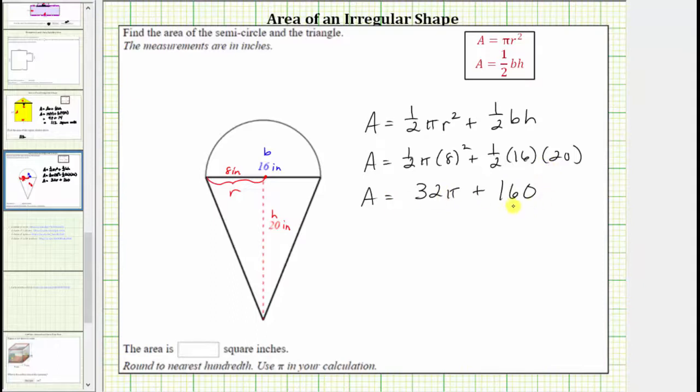So this is the exact area and again the units would be square inches so we put this in parentheses and include the units of square inches. But we are told to use pi in our calculation around to the nearest hundredth. So now we'll go to the calculator and get a decimal approximation for this area.